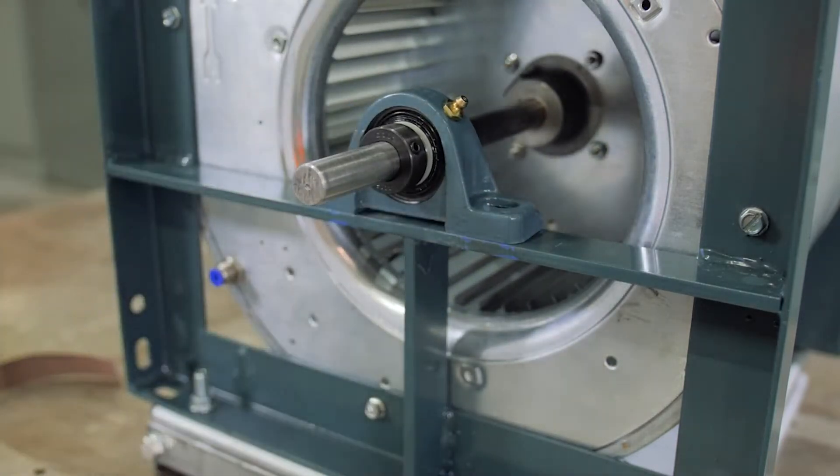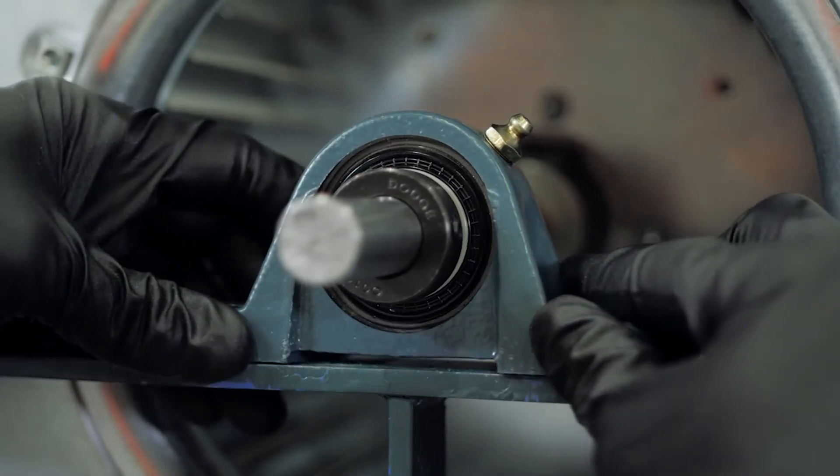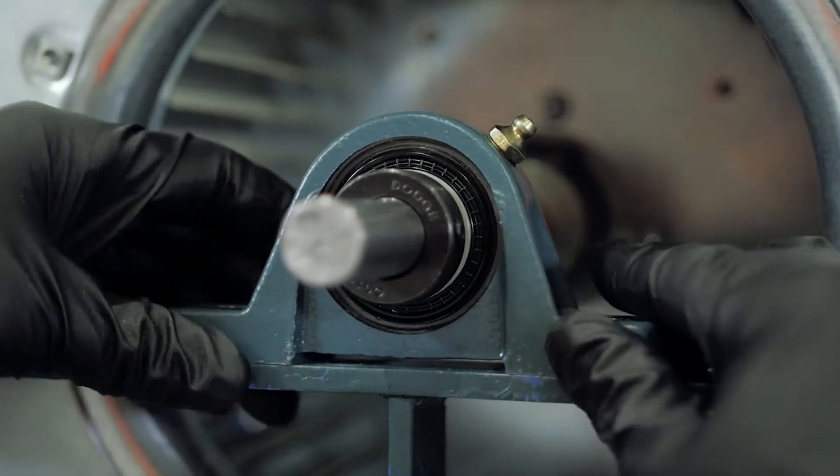A bearing may be aligned using the shaft to position the insert relative to the housing or by fixing the insert to the shaft and adjusting the housing.